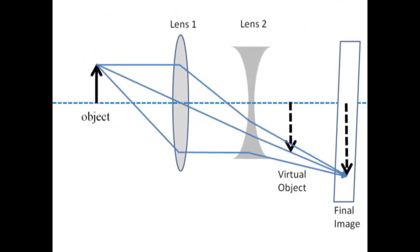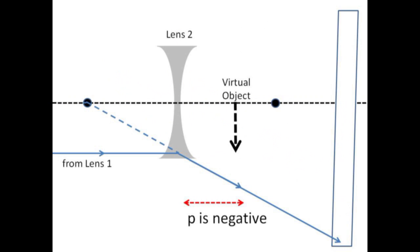The converging lens is now followed up by a diverging lens which places the final image further back. A good mental model is that the image from the first converging lens becomes the object for the second diverging lens.